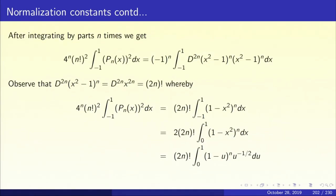After integrating by parts n times, all boundary terms vanish and we get: 4^n(n!)² ∫_{-1}^{1} [P_n(x)]² dx = (-1)^n ∫_{-1}^{1} D^{2n}(x²-1)^n · (x²-1)^n dx. Now D^{2n}(x²-1)^n equals D^{2n}(x^{2n}) since all lower-degree terms vanish after 2n differentiations, giving simply (2n)!. Therefore 4^n(n!)² ∫_{-1}^{1} [P_n(x)]² dx = (2n)! ∫_{-1}^{1} (1-x²)^n dx, where the factor (-1)^n is absorbed into (x²-1)^n to give (1-x²)^n.